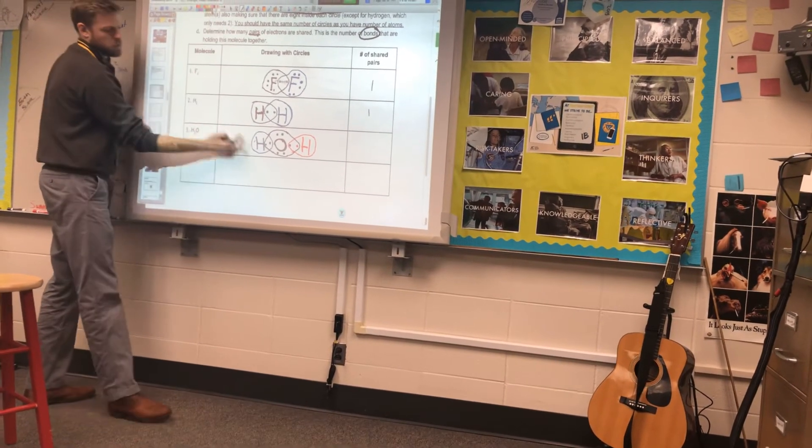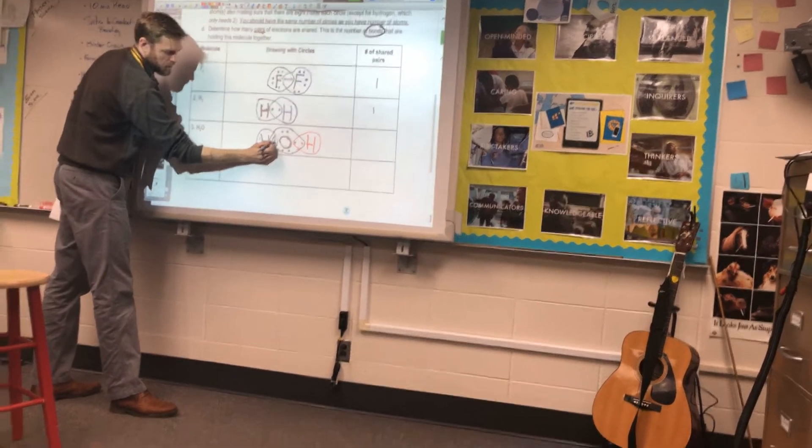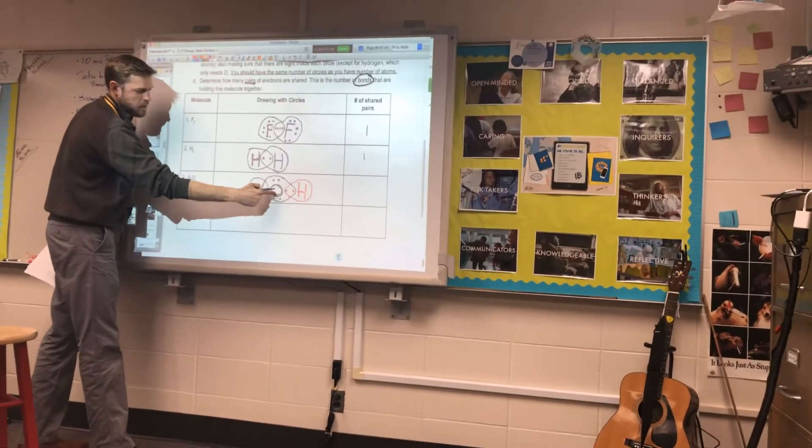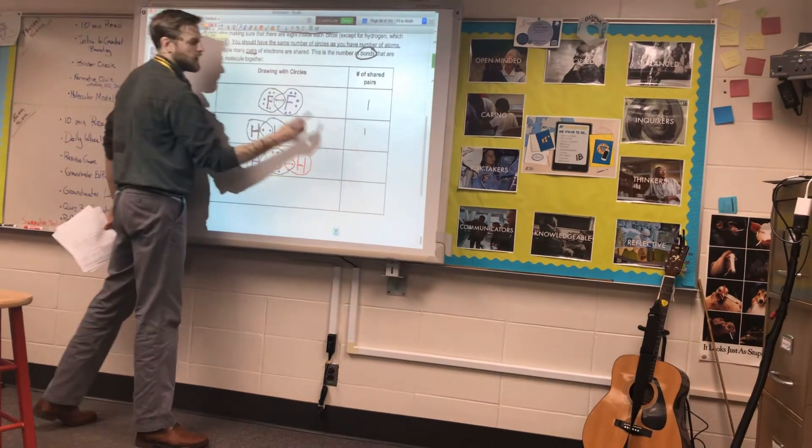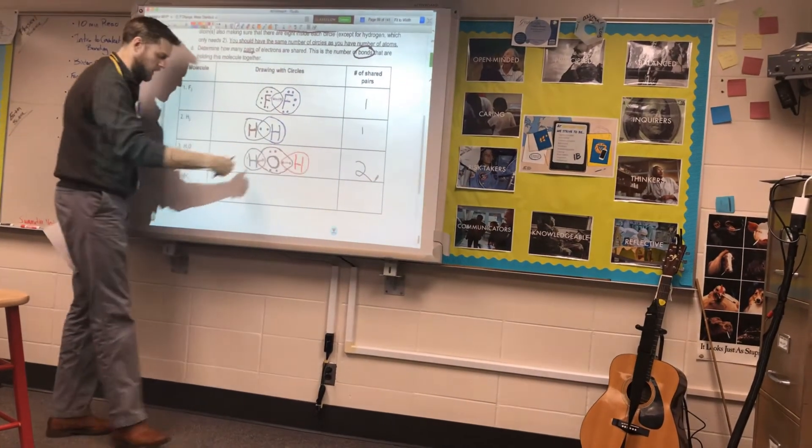And then these two electrons, they represent the shared bond between the hydrogen and oxygen here. Those two electrons represent that bond. And then I heard it in the back. How many pairs do we got? Two. Two. One pair each direction.